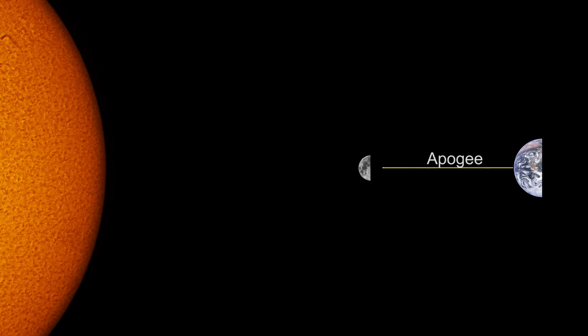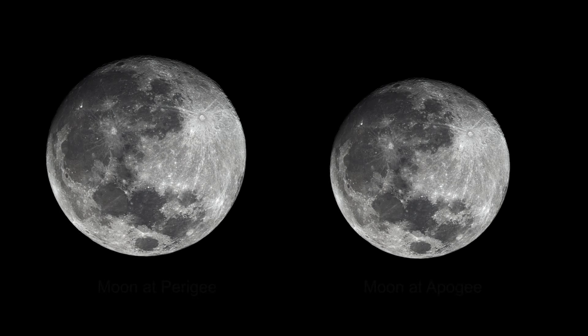This variation in orbit produces a visible change in angular size — how big the Moon appears from Earth. At perigee, the disk of the Moon is 14% larger compared to its appearance at apogee. This angular size can have profound effects on how the Moon covers the solar disk during a solar eclipse.